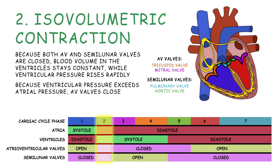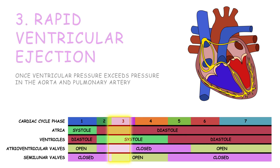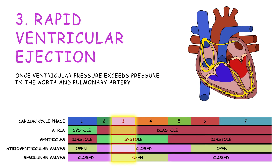Because ventricular pressure exceeds atrial pressure, AV valves close, preventing the flow of blood into the atria. Once ventricular pressure exceeds pressure in the aorta and pulmonary artery, we enter the next phase, rapid ventricular ejection.